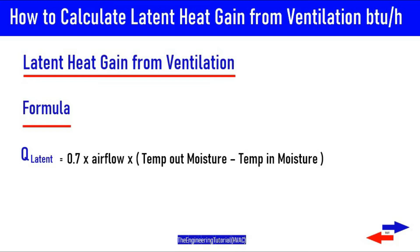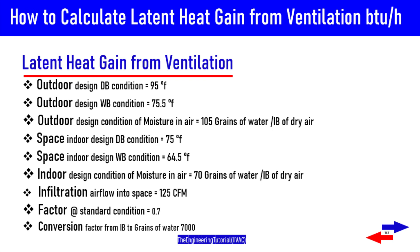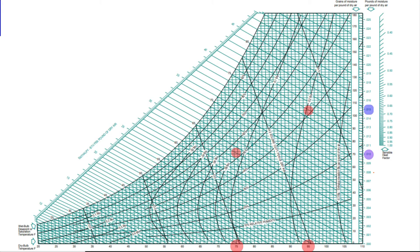The equation is: QL = 0.7 × airflow × (humidity ratio outdoor − humidity ratio indoor). The constant 0.7 is derived from the properties of dry air at standard conditions — 69°F dry air at sea level. Air at other conditions and elevations will cause these factors to change.